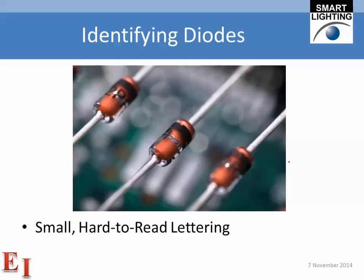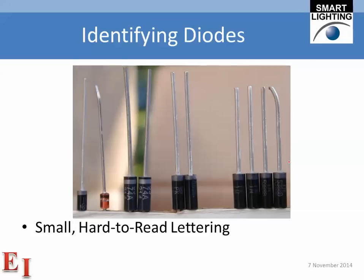Identifying diodes can be a bit tricky because in many cases they're very small and it's not easy to read the lettering on them — they don't come with nice color coding like resistors. This is a highly expanded picture of diodes that look almost exactly like the 4148 we'll be using in class. Small, hard-to-read lettering is par for the course. Each type has a little stripe at one end indicating the direction of current flow.